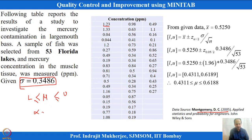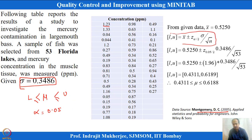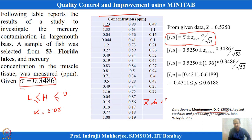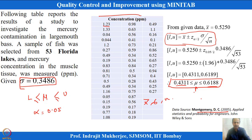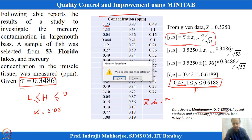We want to find the upper and lower bounds of the confidence interval, assuming alpha = 0.05. Using the confidence interval formulation with the given x-bar, sigma, and n, the final calculation gives the confidence interval of μ as 0.4311 to 0.6188. Let us verify this in MINITAB.